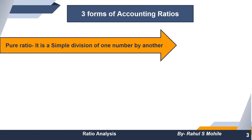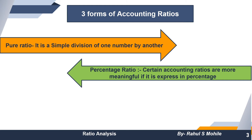Number one is pure ratio. Pure ratio is a simple division of one number by another. For example, if we have 10 divided by 5, the result is 2, and that ratio is called a pure ratio. The second type is percentage ratio, which is very important.